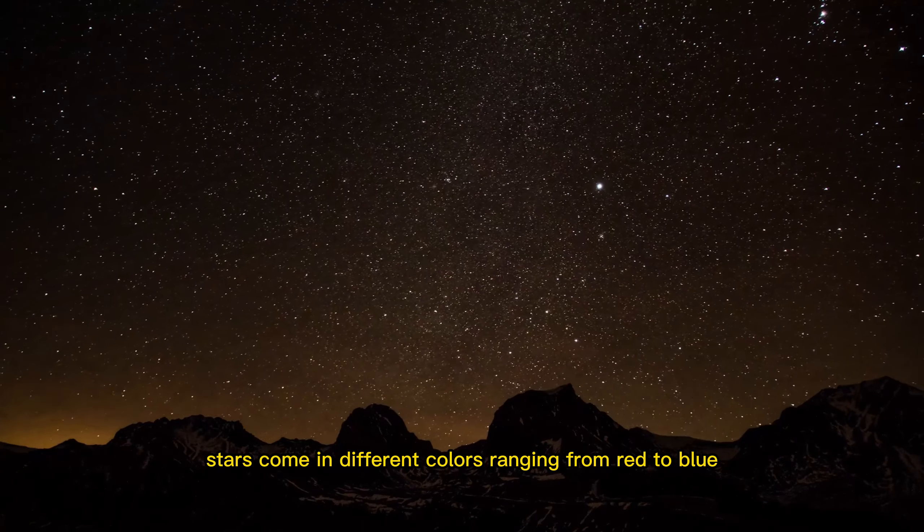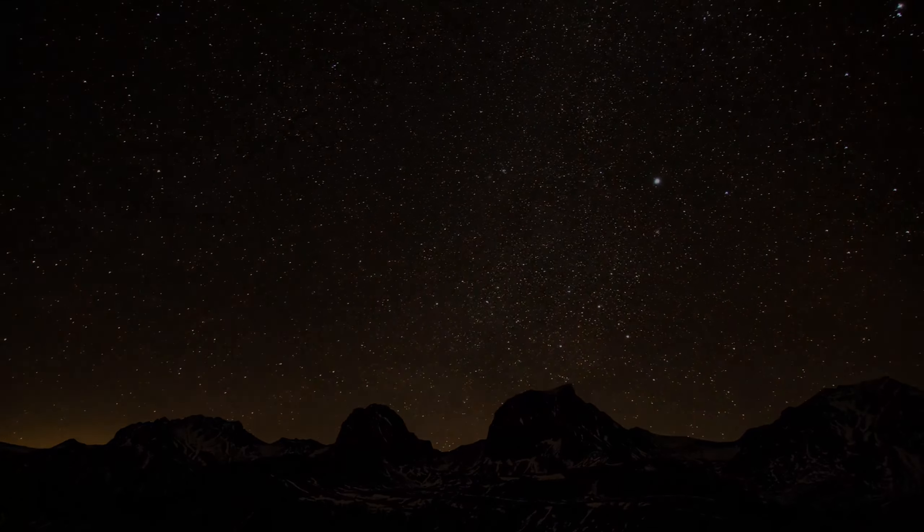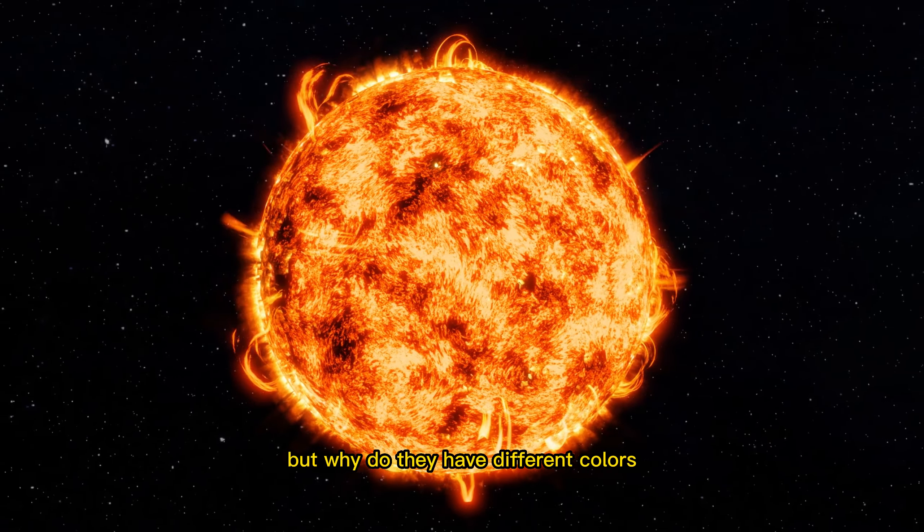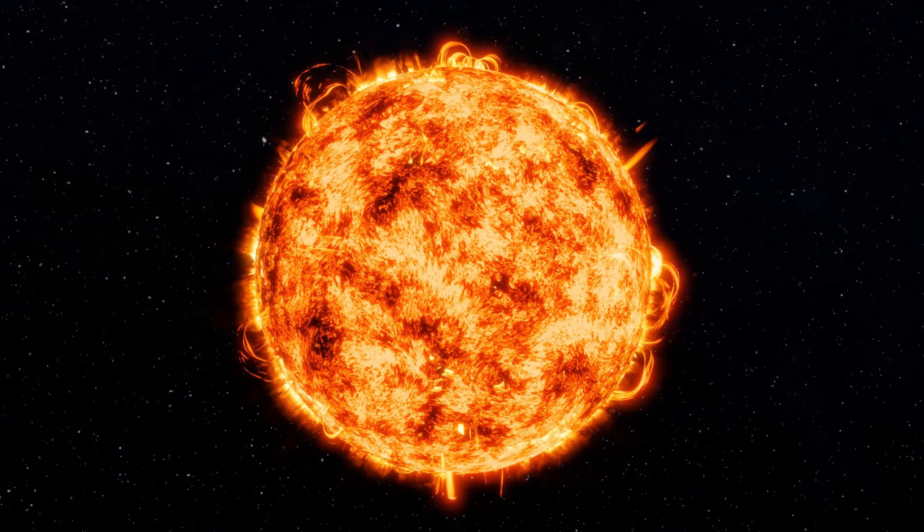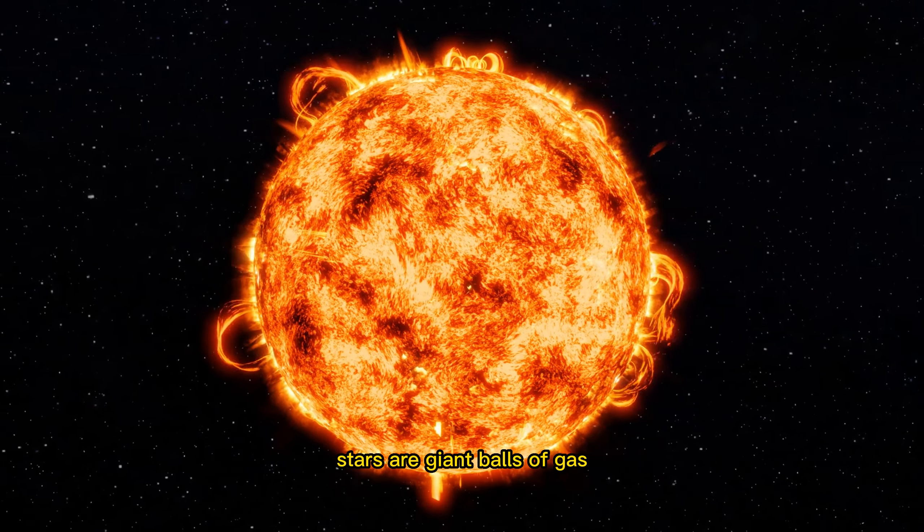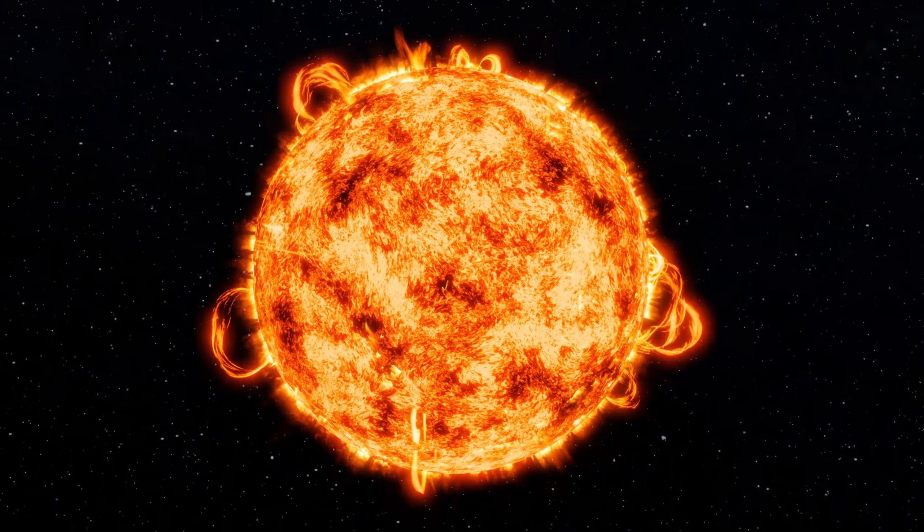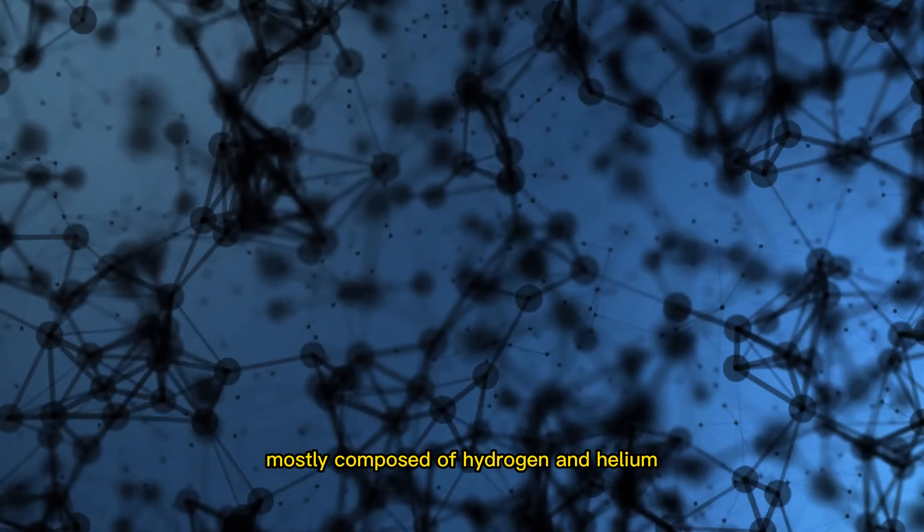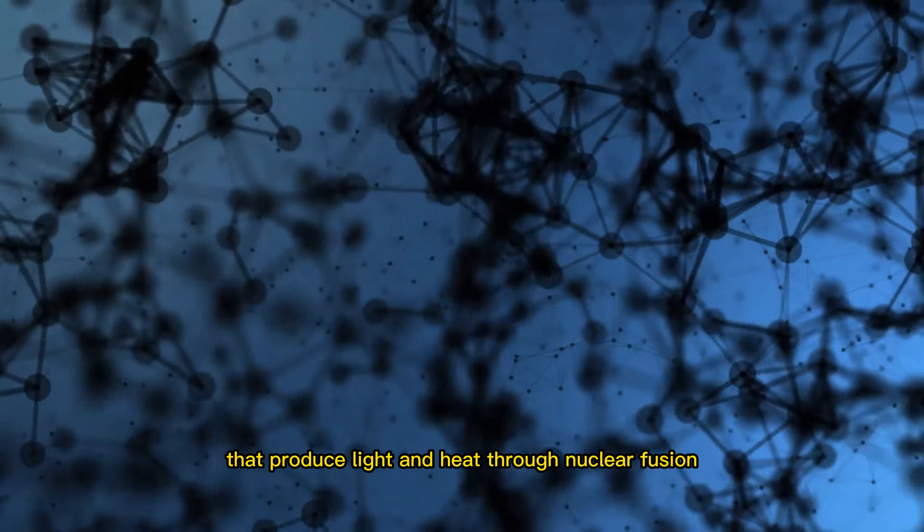Stars come in different colors ranging from red to blue, but why do they have different colors? The answer lies in their temperature. Stars are giant balls of gas, mostly composed of hydrogen and helium, that produce light and heat